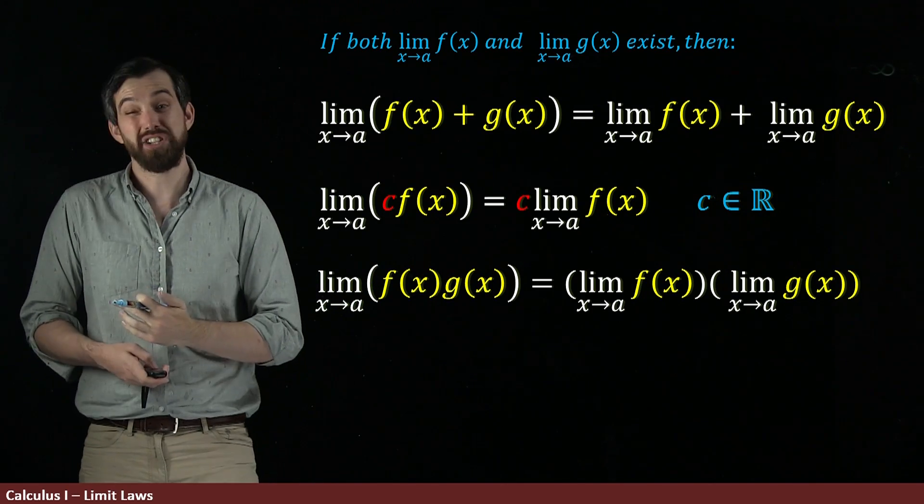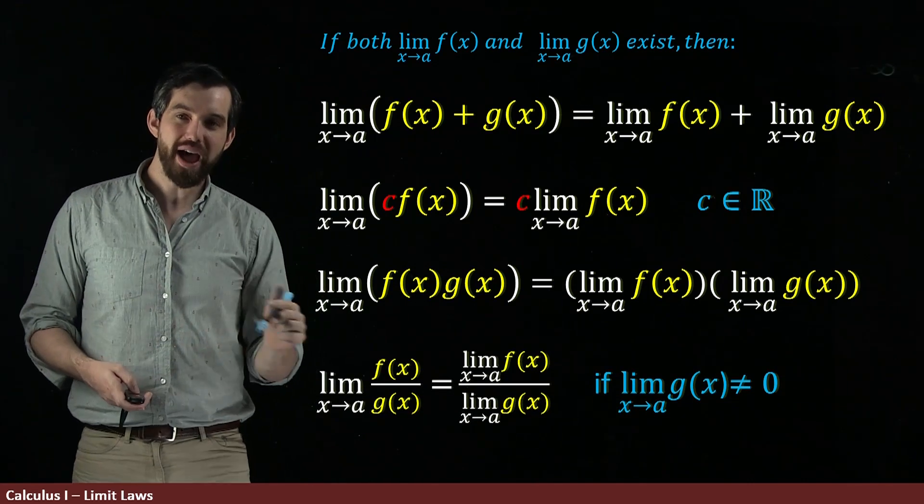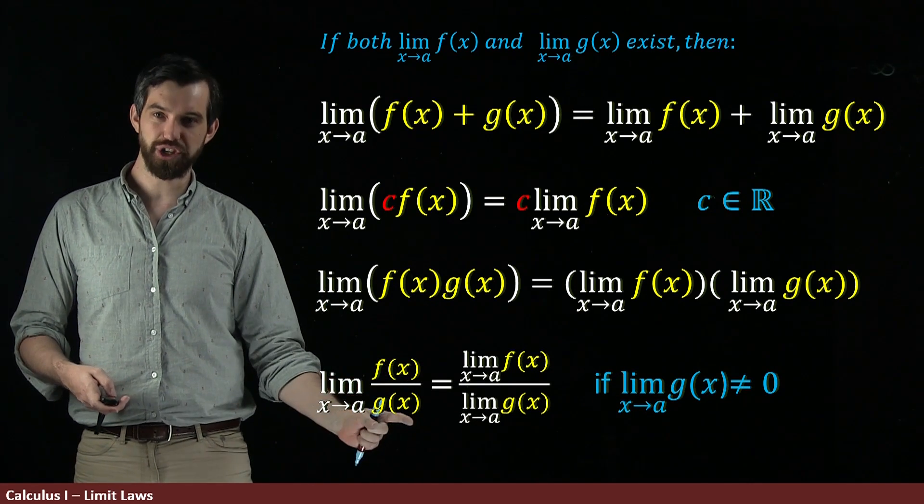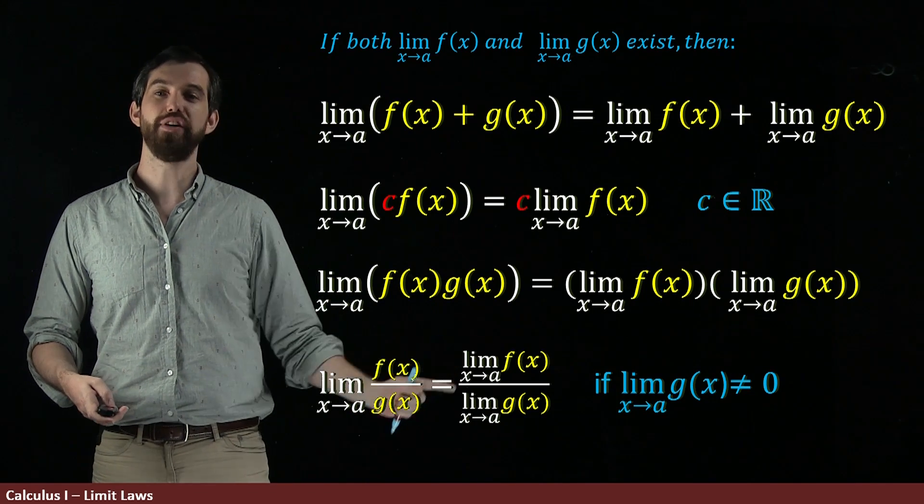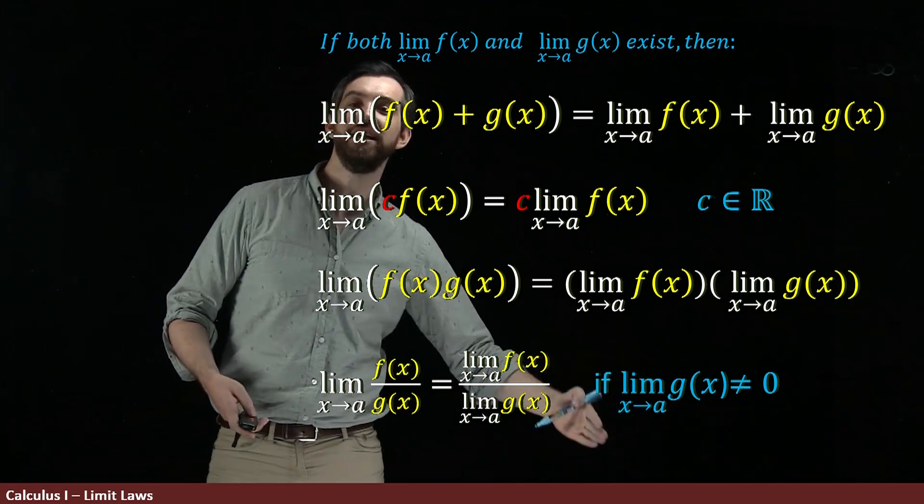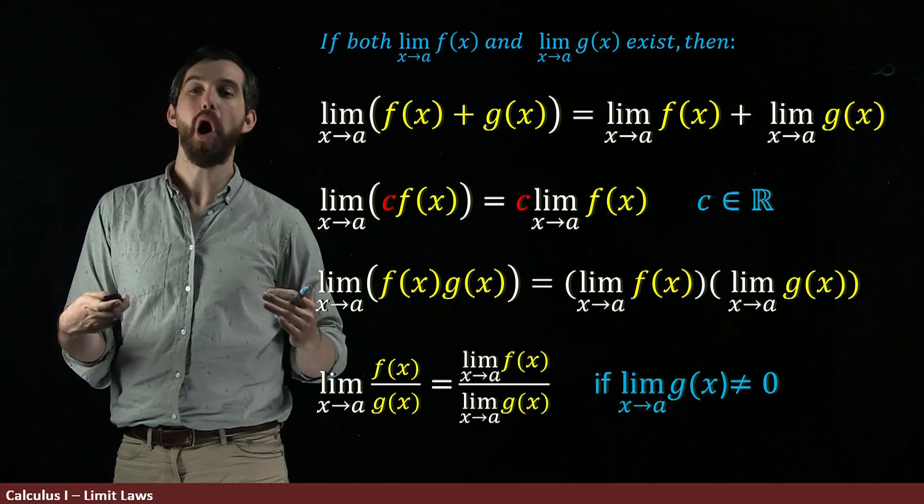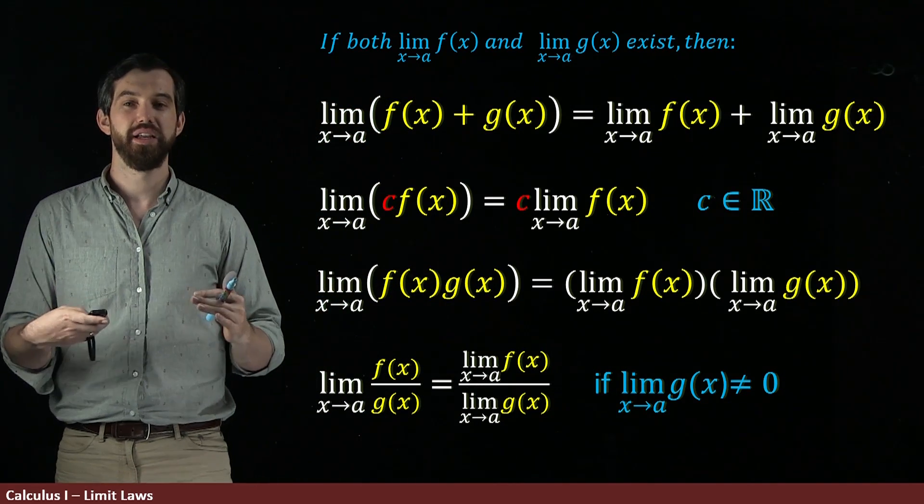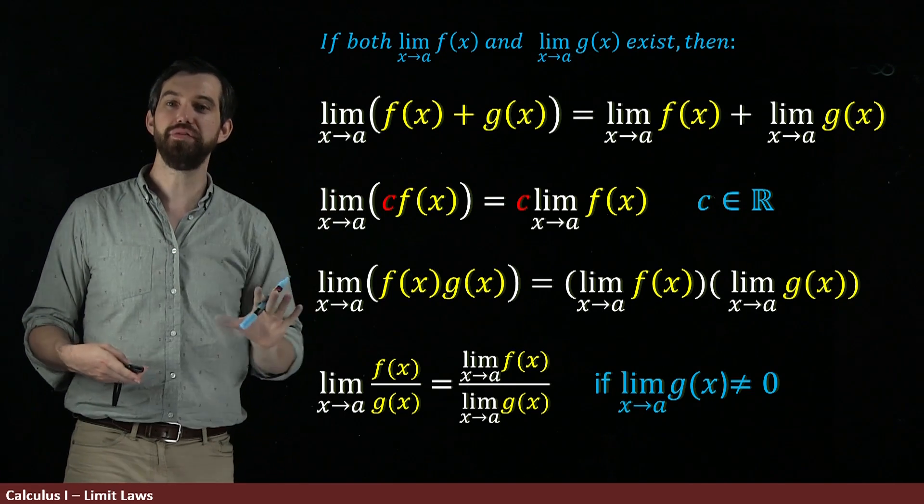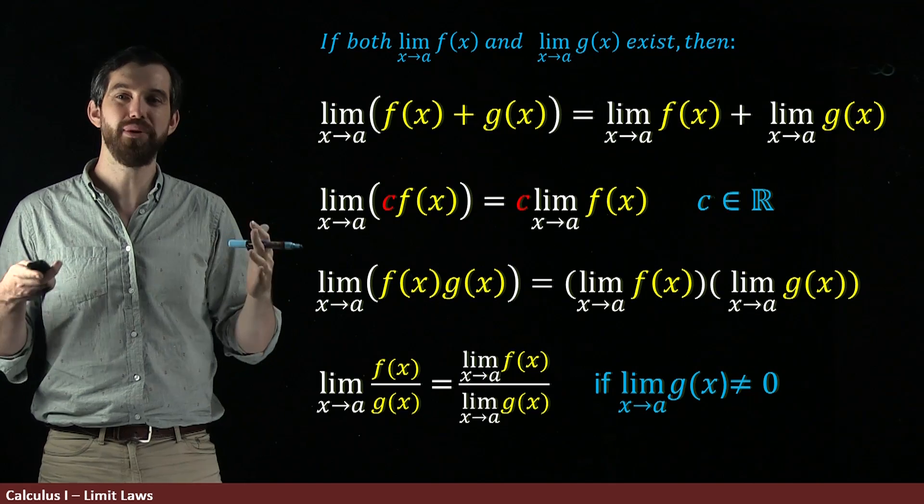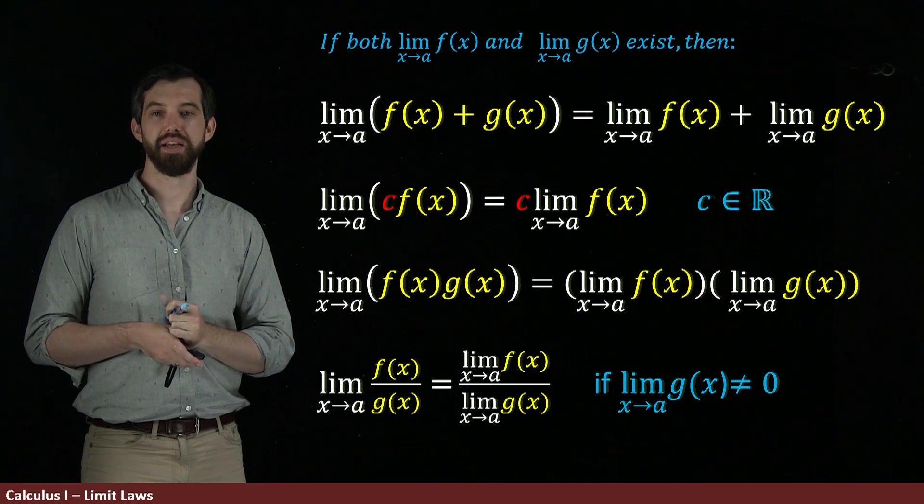The same thing with quotients. We've got to check for non-zero here. But if I have an f of x over a g of x, this is the limit of a quotient, it is the quotient of a limit, provided we have this additional assumption that the one on the bottom, the limit of the g of x is non-zero. So these add up to be a bunch, not all, but a bunch of the different limit laws that allow us to break up more complicated limits.